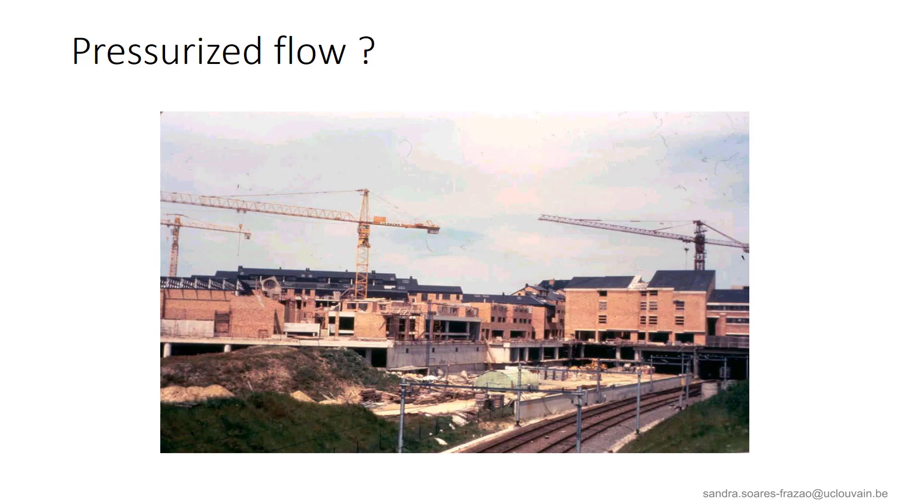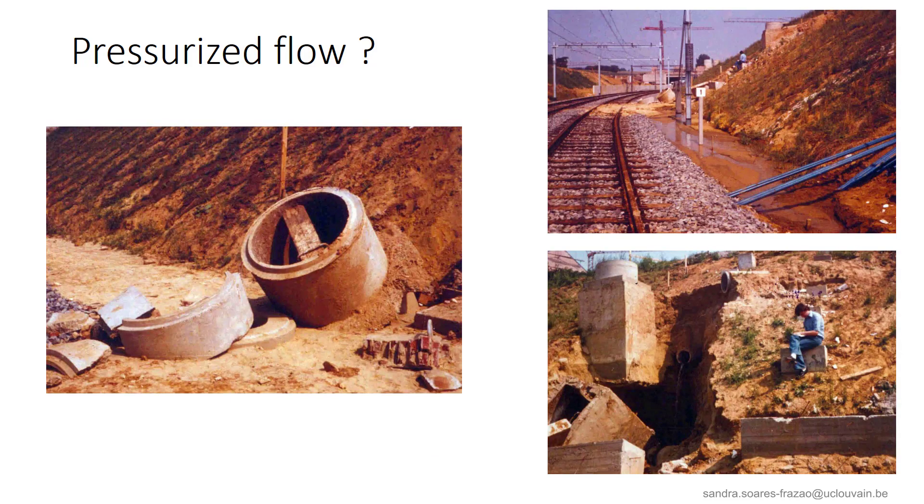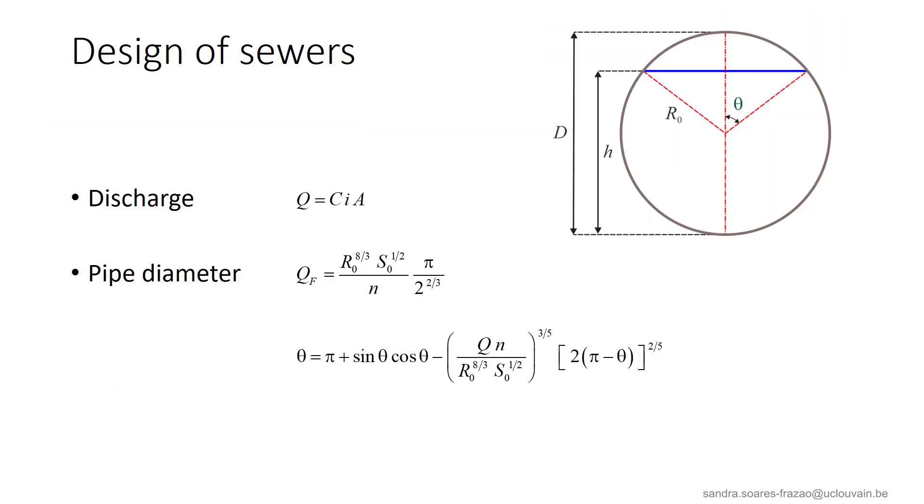However, a pressurized flow in a sewer should in principle be avoided. Here is an example of an accident that occurred at the time of the construction of Louvain-la-Neuve, just a few days before the inauguration of the railway. Due to an obstruction in the sewer pipe, as illustrated here, the flow went under pressure and the manhole exploded due to the sudden release of the excess pressure.